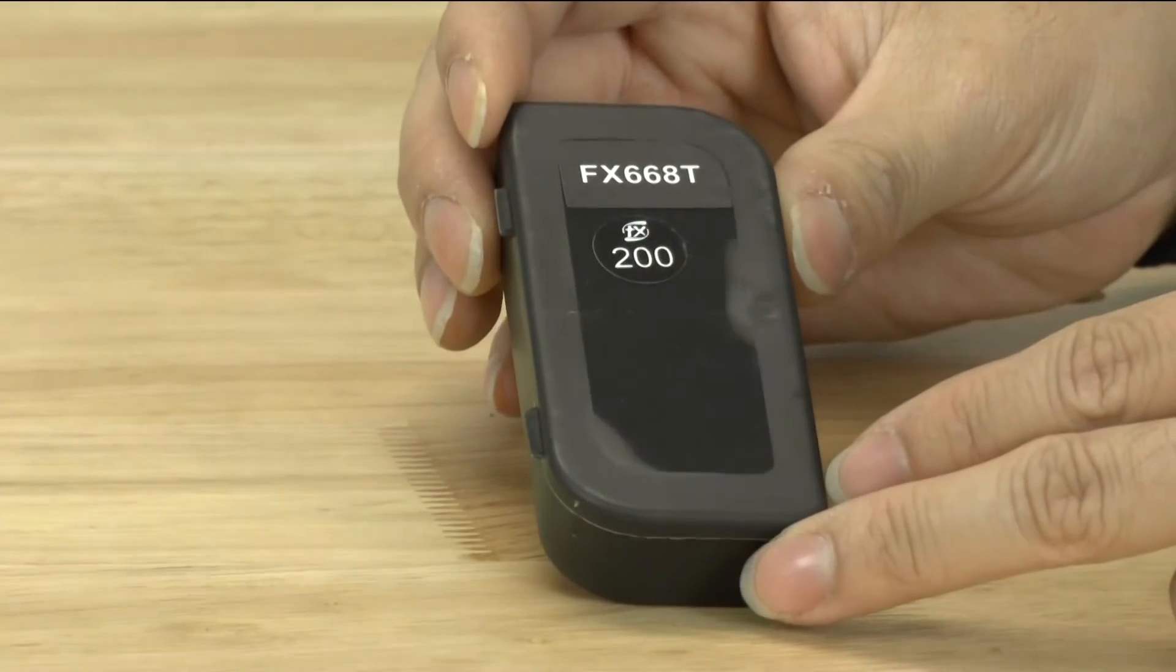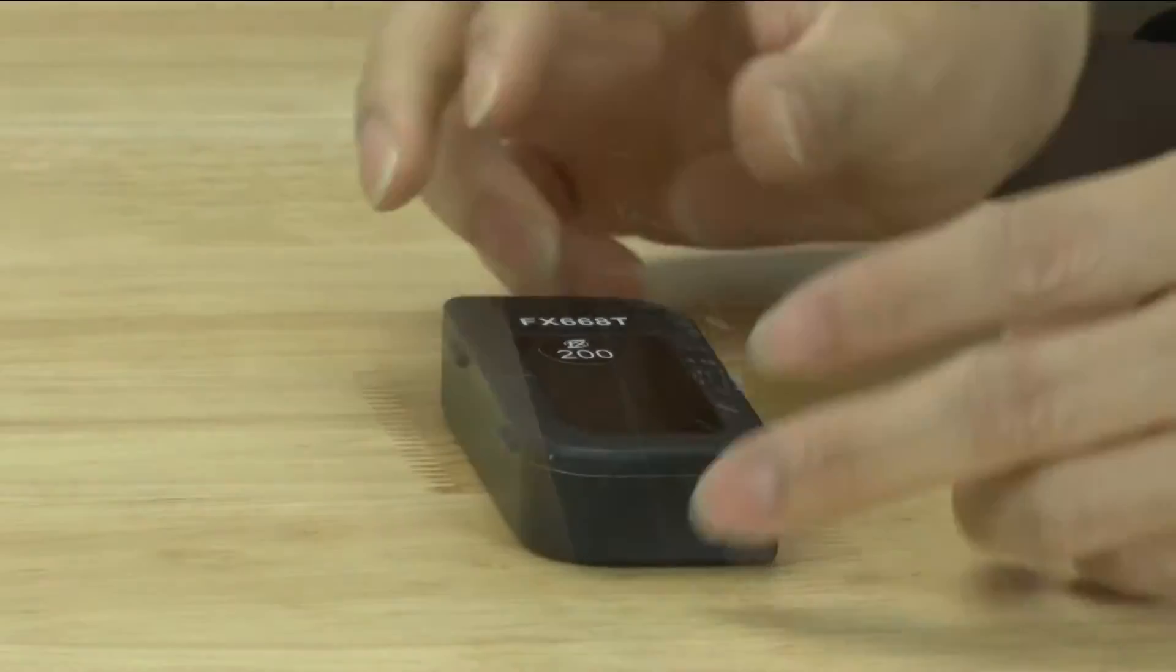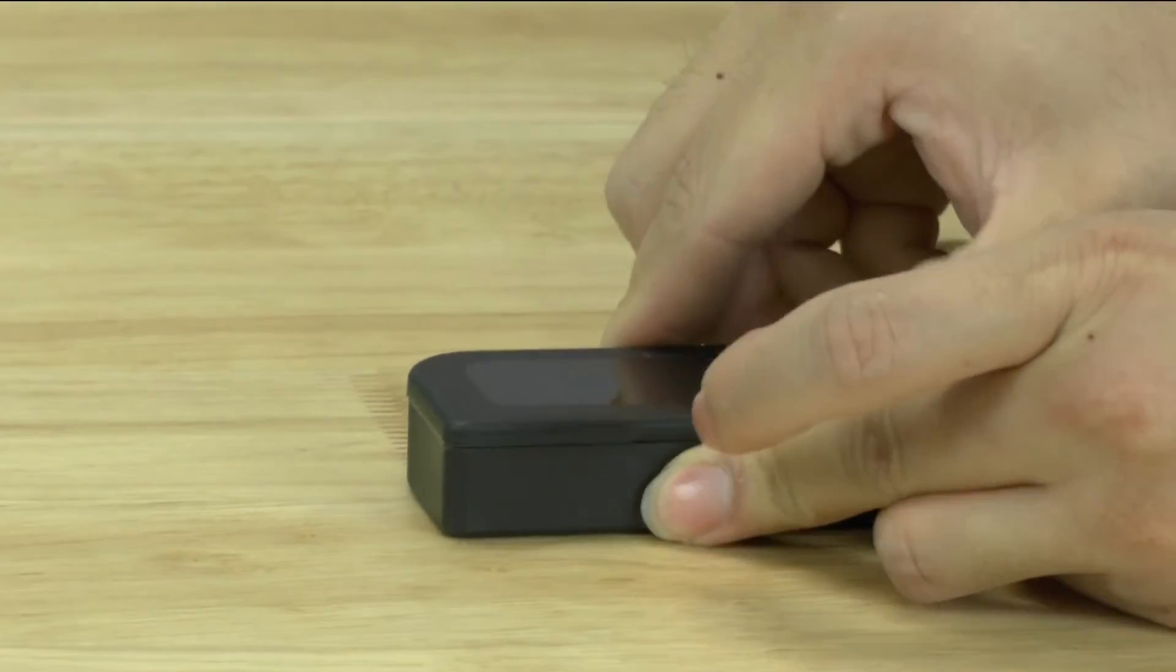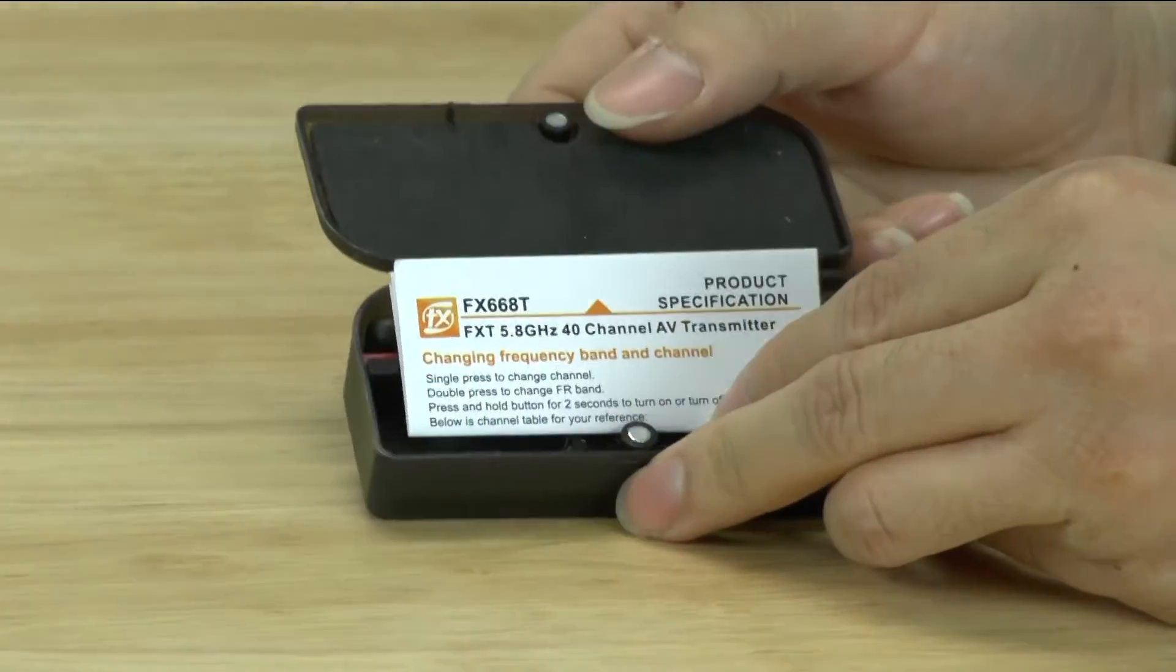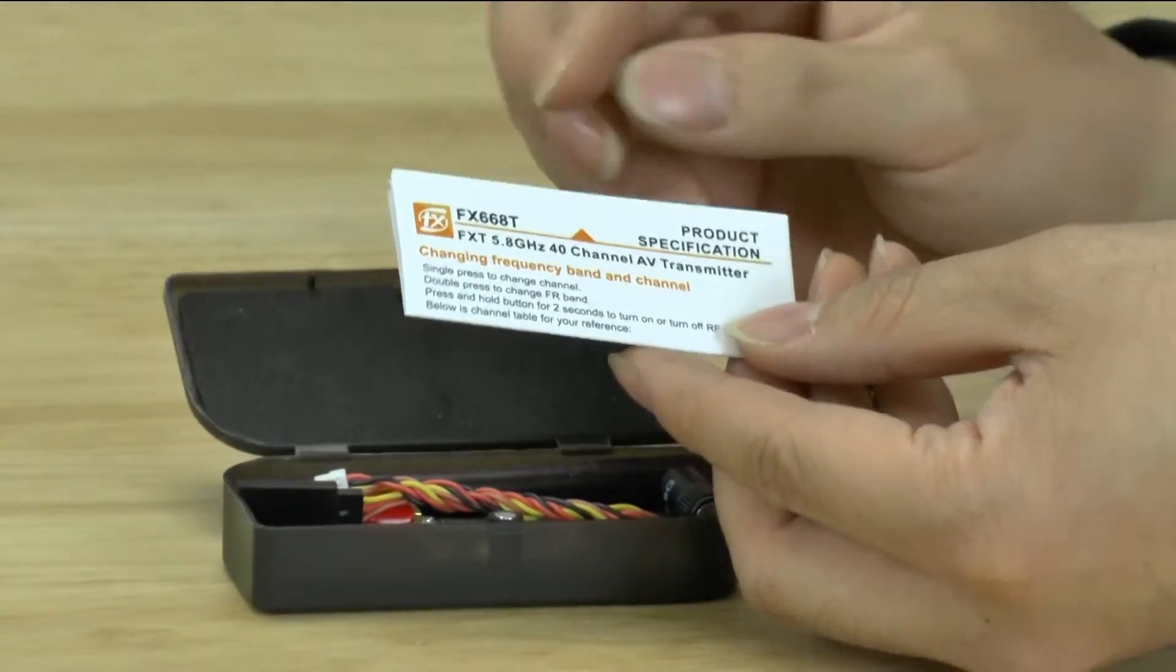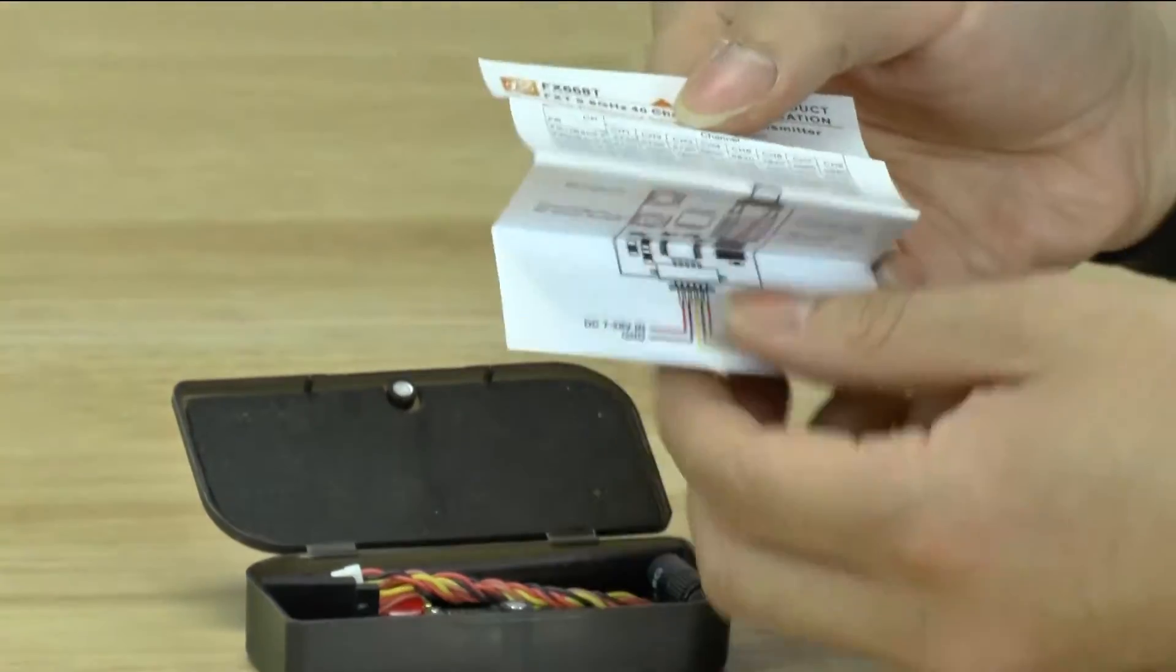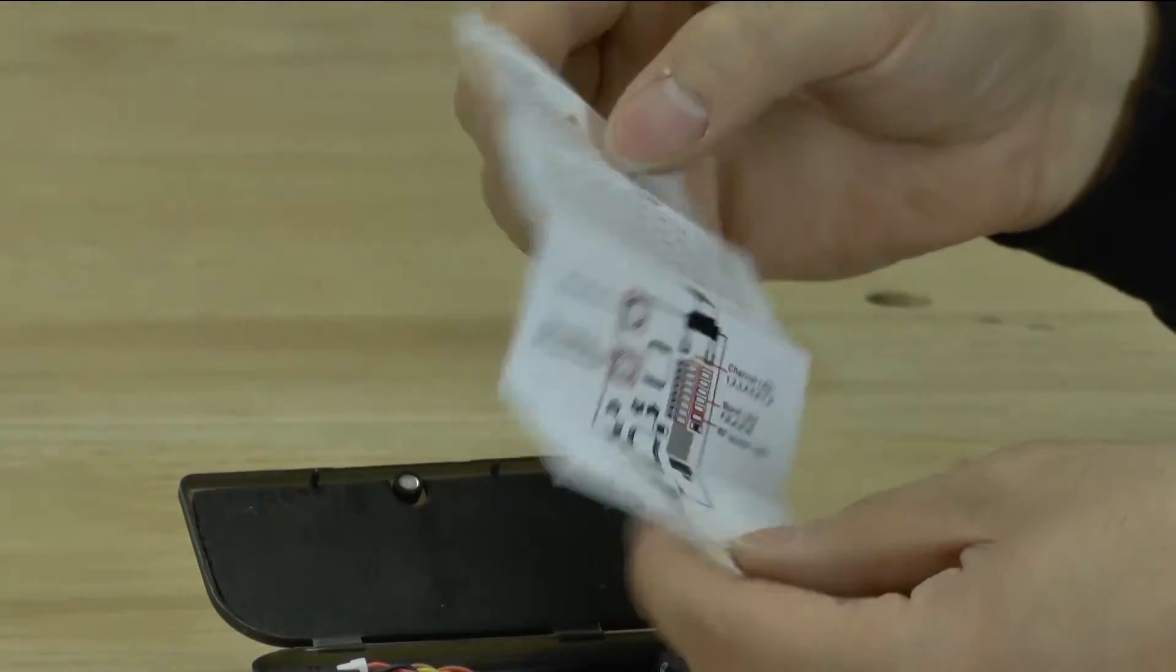As you can see it comes in their standard case which we know from our previous version. So let's go ahead and open it up. If you use their previous line it will actually look very similar. They have the instruction pamphlet. It looks very similar to the previous version.